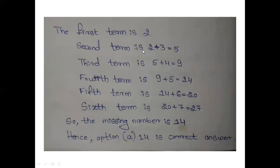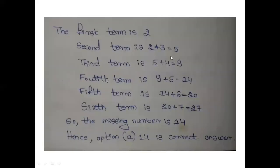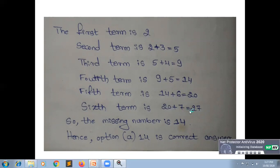The first term is 2. 5 minus 2 equals difference 3. 9 minus 5 equals difference 4. So 2 plus 3 equals 5, 5 plus 4 equals 9, 9 plus 5 equals 14, 14 plus 6 equals 20, 20 plus 7 equals 27.